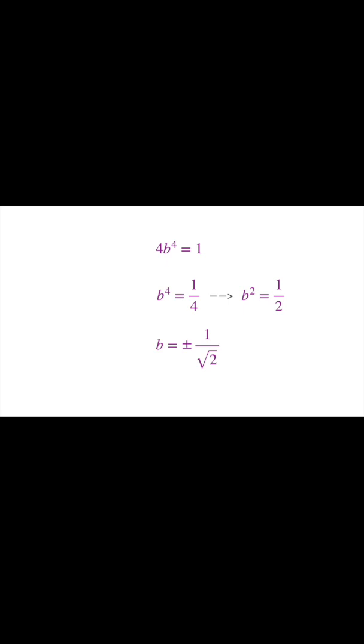That gives that b is plus or minus 1 over the square root of 2. So we have two possibilities for b. Let's take each one.